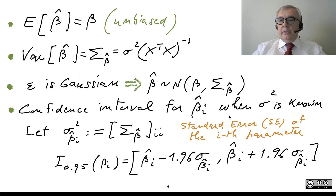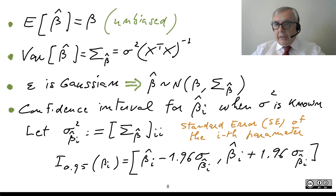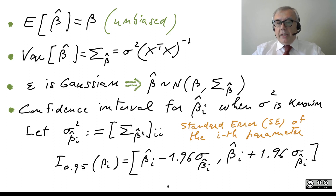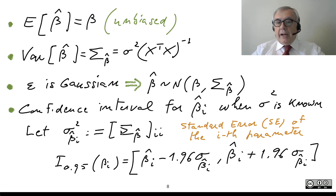We are now ready to obtain the confidence interval for the i-th parameter when sigma-square is known. For this purpose, we define sigma-square-beta-hat-i as the i-th element on the main diagonal of the variance matrix sigma-beta-hat. When you have a vector of Gaussian random variables, all the single variables are Gaussian as well.